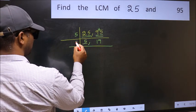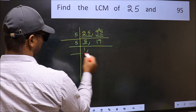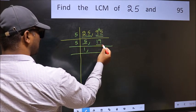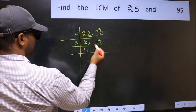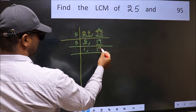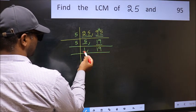Now here we have 5. 5 is a prime number, so 5 times 1 is 5. The other number 19 not divisible by 5, so you write it down as it is. Now we got 1 here.